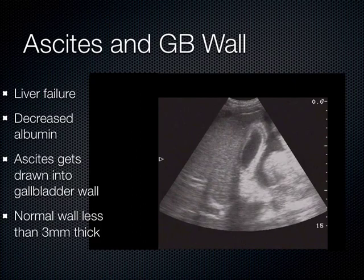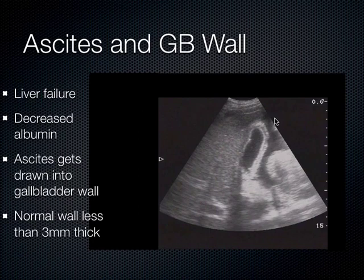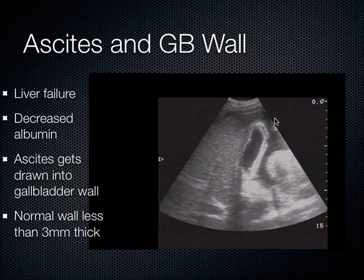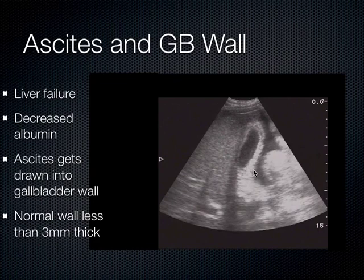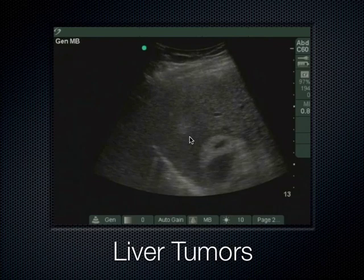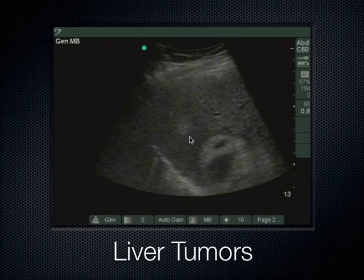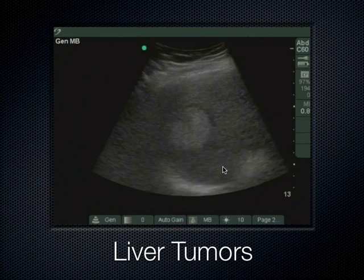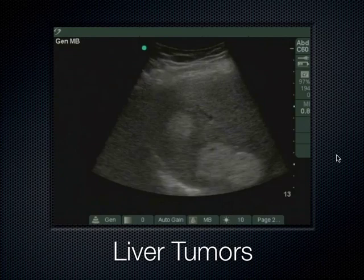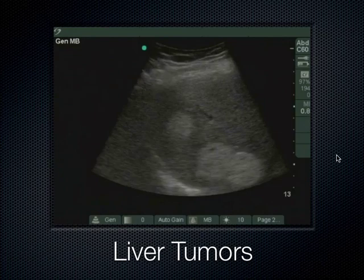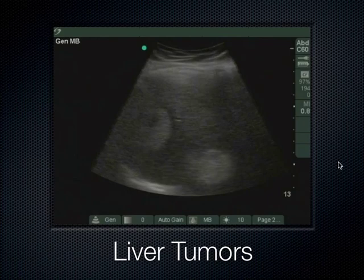When a patient has ascites, the fluid leaches into the gallbladder wall, and almost always patients with ascites have very thickened gallbladder walls. A normal gallbladder wall should be less than 3 millimeters thick. If you ever see these very hyperechoic structures in the liver with complex nature to part of them — these hyperechoic balls — be very concerned. That's what a liver tumor looks like. This liver doesn't have a nice isochoic homogeneous texture; instead it has hyperechoic areas that really jump off the screen.